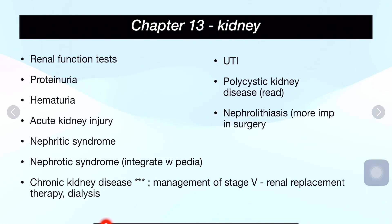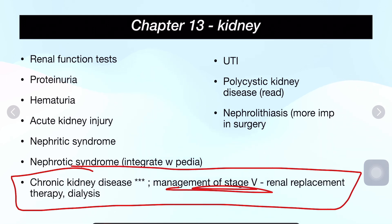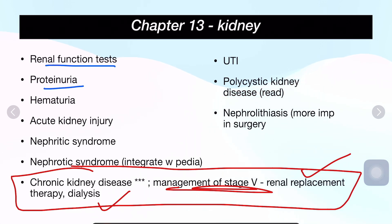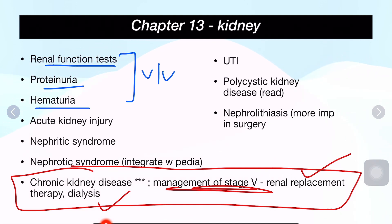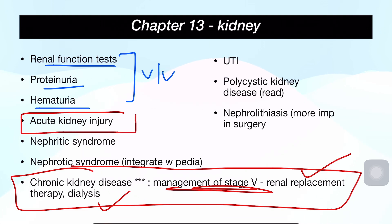Then comes Chapter 13, Kidney. You can integrate it with Pedia, where you will learn nephrotic and nephritic syndromes. CKD is the most important topic, including management of Stage 5, renal replacement therapy and dialysis — their indications and contraindications. Practical aspects include renal function tests, proteinuria, and hematuria — these are your viva basics. UTI, polycystic kidney, AKI with RIFLE criteria are also important read topics. Nephrolithiasis is more important in surgery.